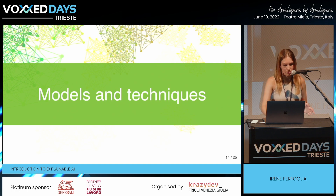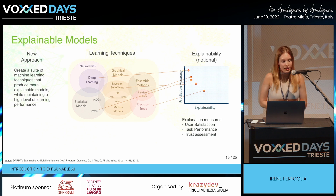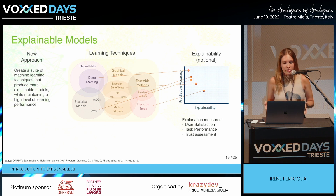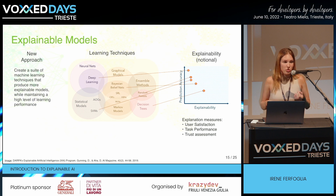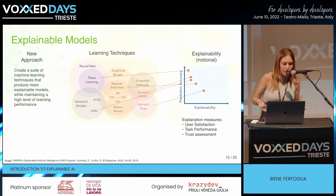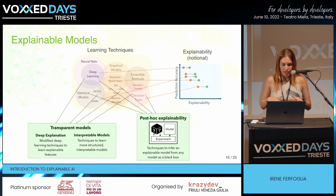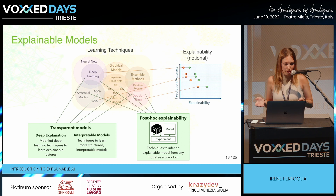We can now move on to see some models and techniques to achieve explainability. What explainable models are all about is the trade-off of performance versus explainability. In this graph, you can see some techniques you may be familiar with. For example, support vector machines have good explainability already by themselves, but their prediction accuracy isn't the greatest. On the other hand, with deep learning, we move up the prediction accuracy axis, but they're basically a black box — we know the input, we know the output, but how we get from one to the other is basically unknown. What we want to achieve is moving from the top left of the graph to the top right, increasing explainability without sacrificing learning performance. To do so, we can modify the techniques themselves or infer an explainable model from any model as a black box with post-hoc explainability.